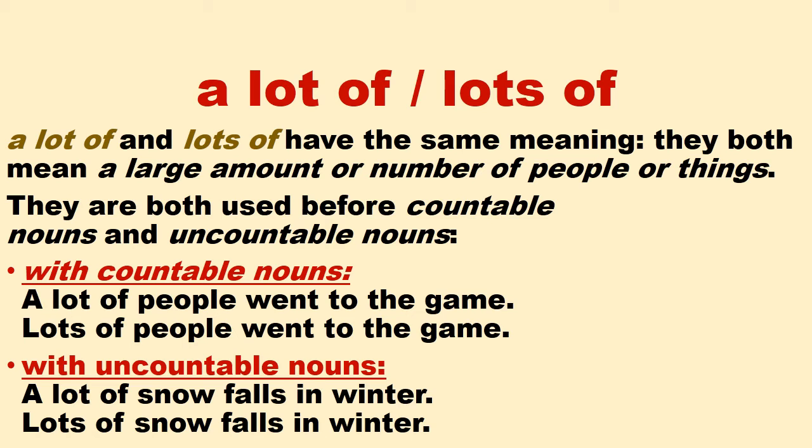In the first example, 'people' is countable — you can count people on your fingers. In the second example, 'snow' is uncountable — you cannot count it. So 'a lot of' and 'lots of' are both used to show a large amount or number of people or things. Is that clear?